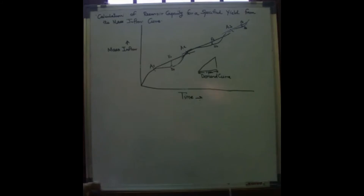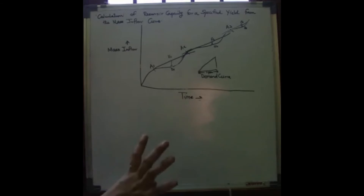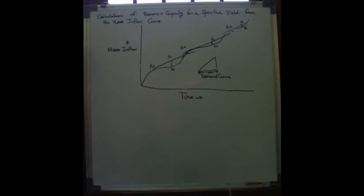This is how you calculate reservoir capacity for a specific yield. The key elements are the specific yield, reservoir capacity, and the mass inflow curve. This gives us the value of reservoir capacity.